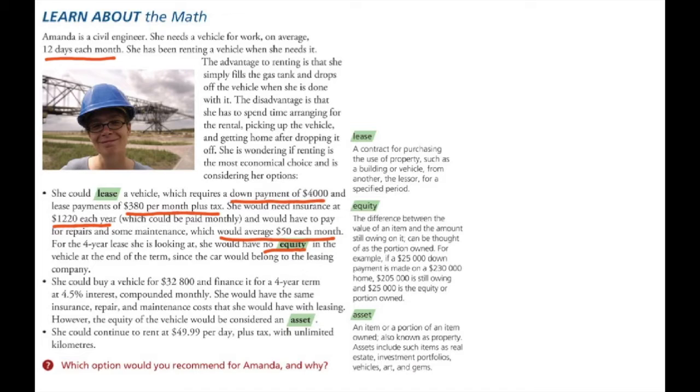She could choose to buy the vehicle, $32,800, finance it for a four-year term at 4.5% compounded monthly. She would still have to pay for the plates, the repair, the maintenance, just as she would with leasing. However, at the end of this four-year, she would own the vehicle outright, and she would have equity in it, which would be an asset for her. So at the end of this four years, if this vehicle is worth $11,000, she could turn around and sell it and get $11,000 in her pocket. With the lease, she couldn't.